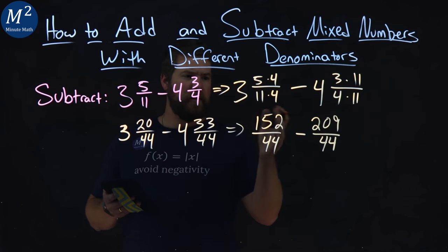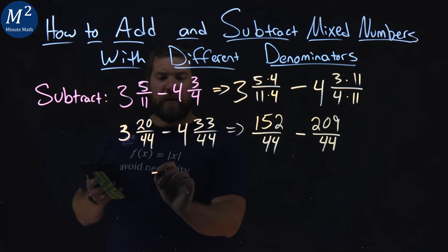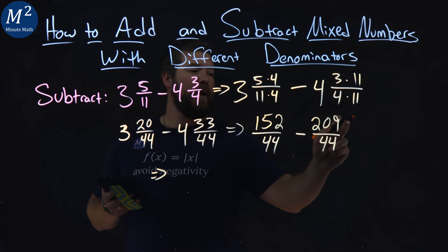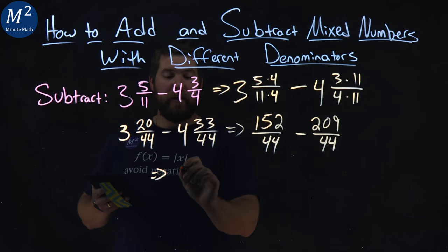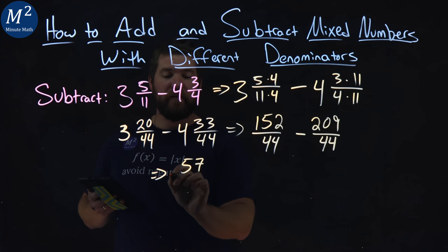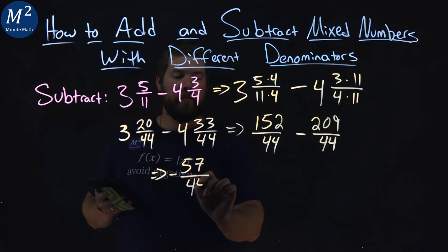From there, we subtract the numerators, and we're left with 152 minus 209, comes out to be negative 57, over 44.